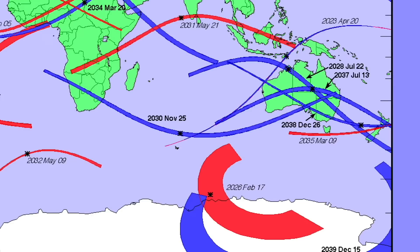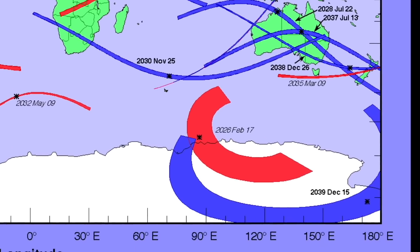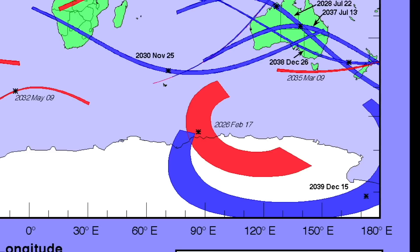And November 25th, South Africa gets one as well. Amazing that Australia gets four in the coming decade — in the next 14 years from this recording. The best one of all, I think, is December 26th, 2038 — one day after Christmas, so that'll be fun. And if you wish to, you can also go in 2039 a little bit further south into Antarctica to see a total solar eclipse there. That would be amazing.